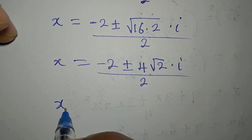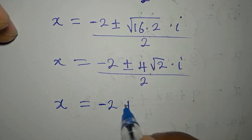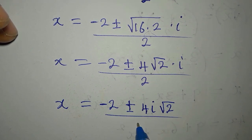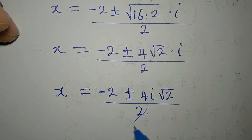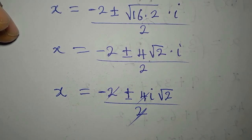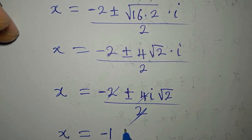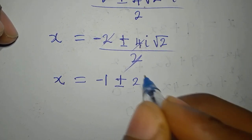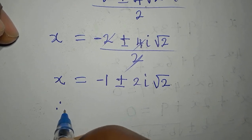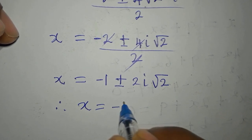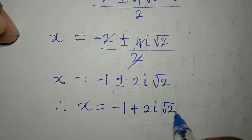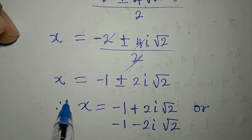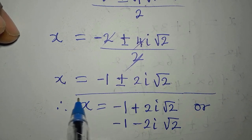To continue: x equals minus 2 plus or minus 4i root 2, all divided by 2. We can simplify — 2 divides into minus 2 to give minus 1, and 2 divides into 4i to give 2i. So x equals minus 1 plus or minus 2i root 2. Therefore x equals minus 1 plus 2i root 2, or x equals minus 1 minus 2i root 2. These solutions are complex solutions.